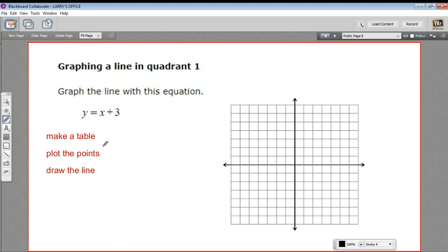Following these steps is a good way to approach a problem like this. So first, we're going to make a table of x and y values. Then we're going to get points from that table and plot them on the graph, and then we're going to draw the line. So let's make a table here with x on the left and y on the right, and let's just choose some values to put in.